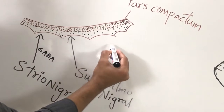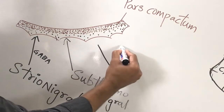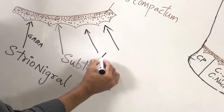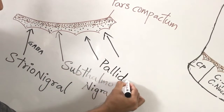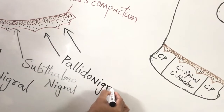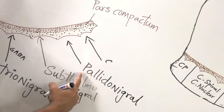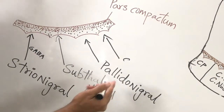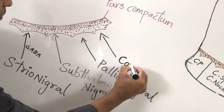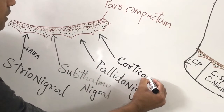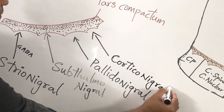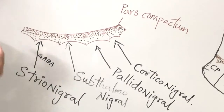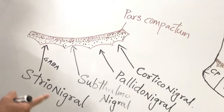Two more afferents to the substantia nigra are pallidonigral fibers coming from the globus pallidus (part of basal nuclei), and corticonigral fibers coming from the cerebral cortex. So remember these four important afferents to the substantia nigra.